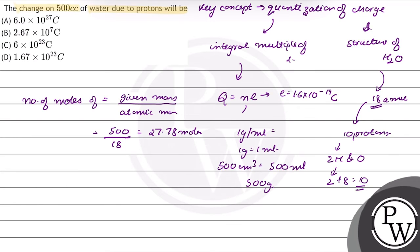The number of moles is equal to the number of molecules upon Avogadro's number. So the number of molecules is equal to 27.78 into Avogadro's number which is 6.022 into 10 raised to power 23. This will equal to 1.67 into 10 raised to power 25.